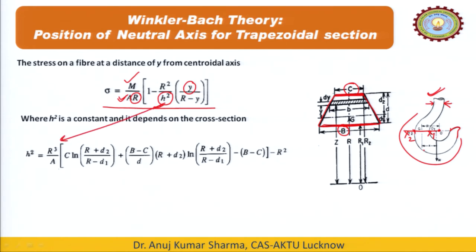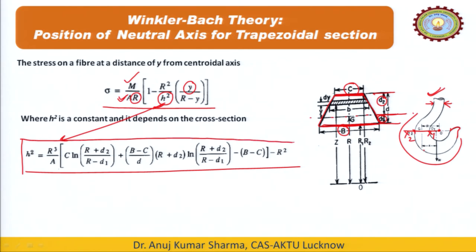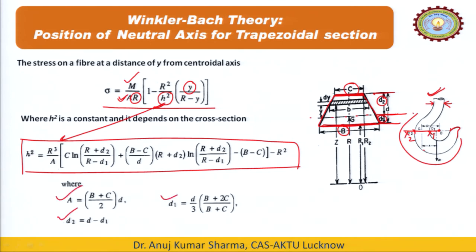We need h² for this cross section. We have already derived h² in previous lectures. The formula is: h² = R³/A × [c·log((R + d₂)/(R − d₁)) + (b − c)/d × {(R + d₂)·log((R + d₂)/(R − d₁)) − (b − c)}] − R². Here d₂ is the portion above the centroidal axis and d₁ is the portion below. This is the standard formula — we must remember it or know how to derive it. It is better to remember and apply it directly to solve numerical problems.